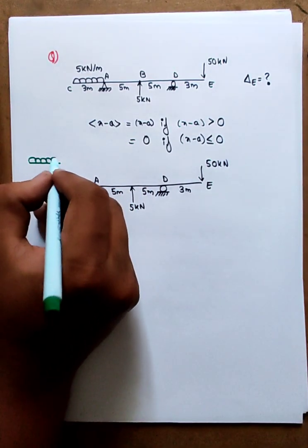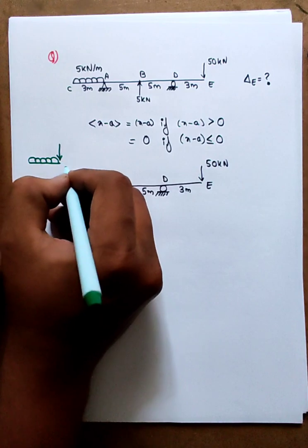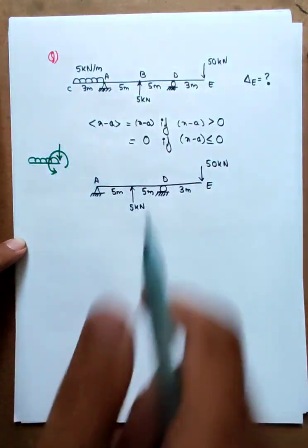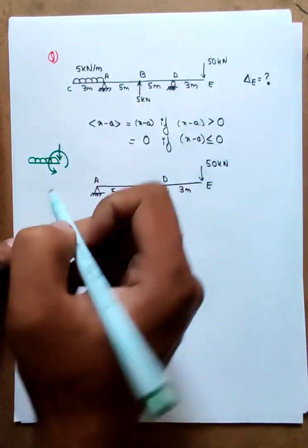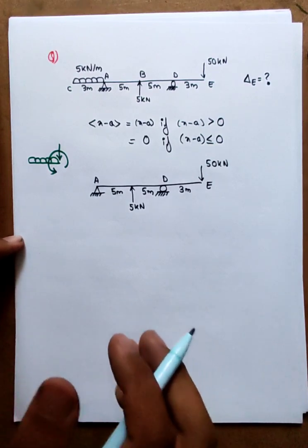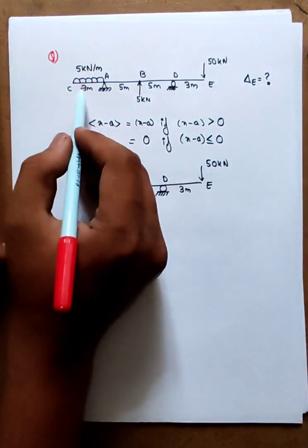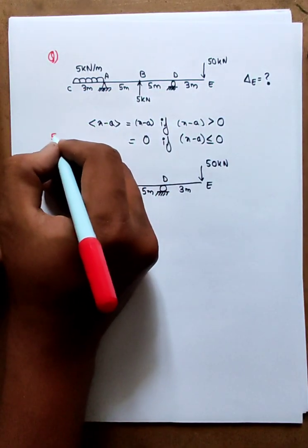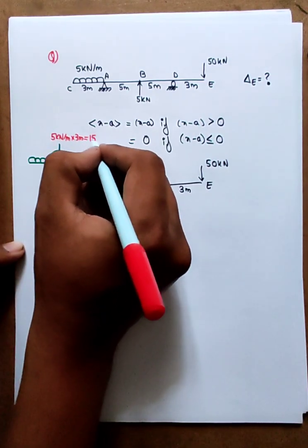I will find the UDL. What I do with the UDL is find the equivalent force and equivalent moment. I give 5 kN per meter. The equivalent downward force is 5 into 3, which is the length of UDL. 5 kN per meter into 3 meters gives an equivalent force of 15 kN.